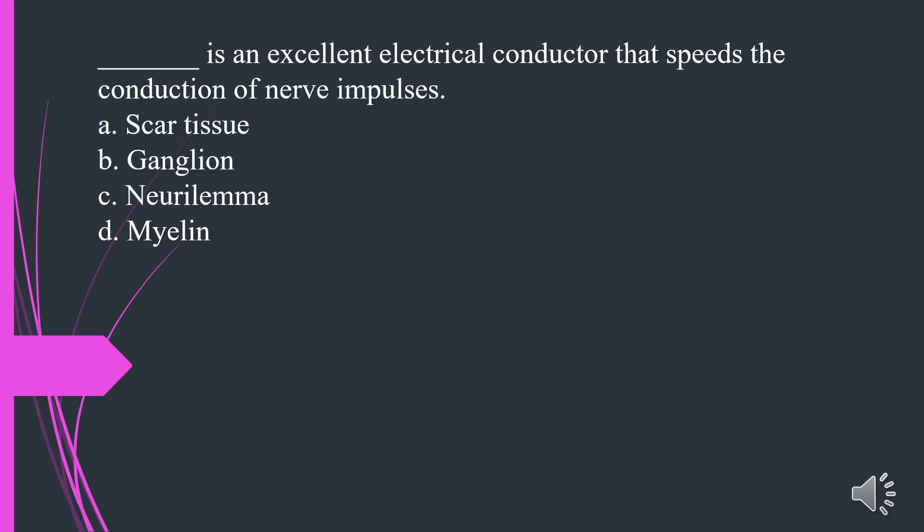What is an excellent electrical conductor that speeds the conduction of nerve impulses? A. Scar tissue. B. Ganglion. C. Neurolemma. D. Myelin. The answer is D. Myelin.